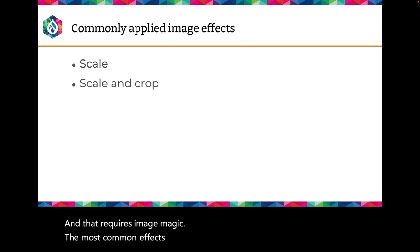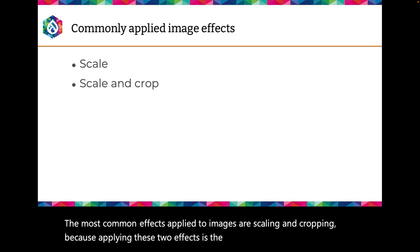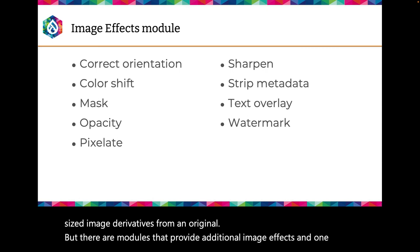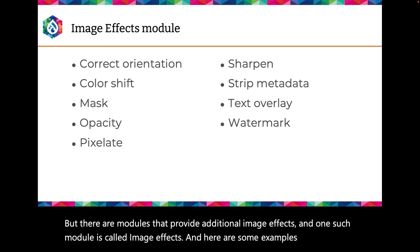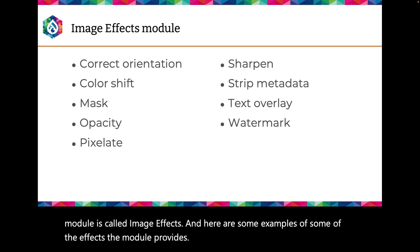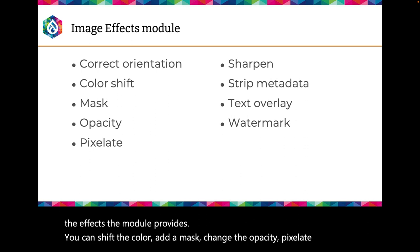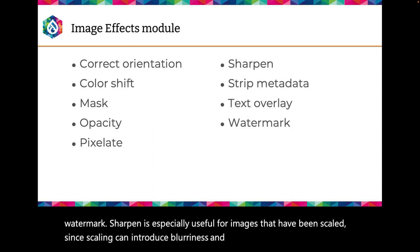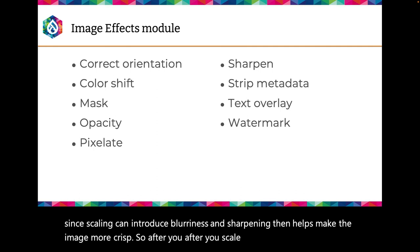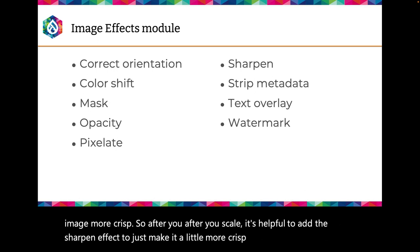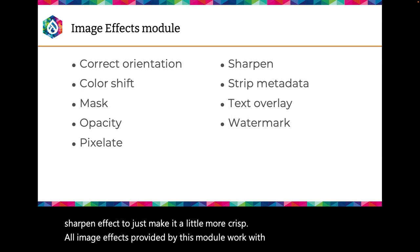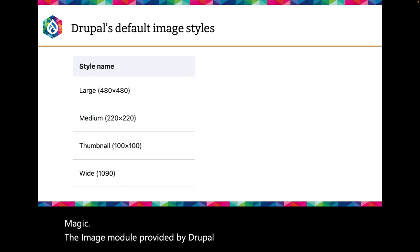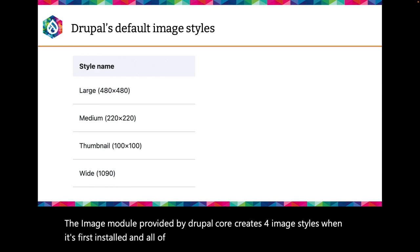The most common effects applied to images are scaling and cropping, as these are the easiest way to generate right-sized image derivatives from an original. There are modules that provide additional image effects — one such module is ImageFX, which offers effects like color shifting, adding a mask, changing opacity, pixelation, and adding a watermark. Sharpen is especially useful for images that have been scaled, since scaling can introduce blurriness; sharpening helps make the image more crisp. All image effects provided by this module work with both GD2 and ImageMagick. The image module provided by Drupal core creates four image styles when first installed, and all of them only scale an image to a maximum width or height.